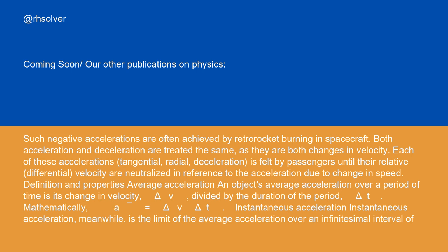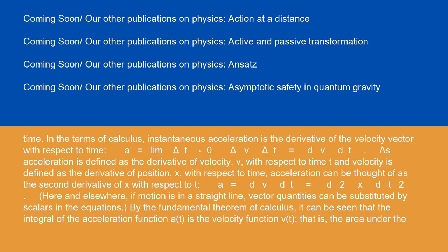Instantaneous acceleration is the limit of the average acceleration over an infinitesimal interval of time. In the terms of calculus, instantaneous acceleration is the derivative of the velocity vector with respect to time. It equals lim(Δt→0) Δv/Δt = dv/dt. As acceleration is defined as the derivative of velocity v with respect to time t, and velocity is defined as the derivative of position x with respect to time, acceleration can be thought of as the second derivative of x with respect to t: a = dv/dt = d²x/dt².